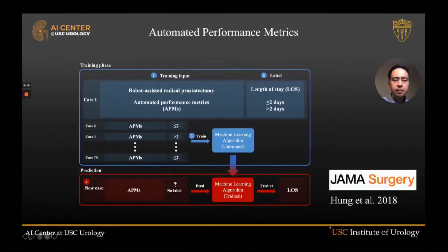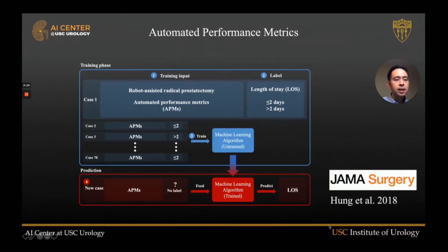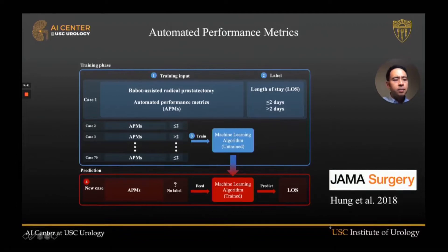Since there is so much data, we used machine learning to process all this information and gain clinical insights. Each prostatectomy case records a set of automated performance metrics, which are associated with clinical labels such as time spent in the hospital after surgery. A brand new case is then evaluated: will this patient stay one or two days — expected length of stay — or more than two days? The model predicts this with approximately 85% accuracy. This was published in JAMA Surgery in 2018.